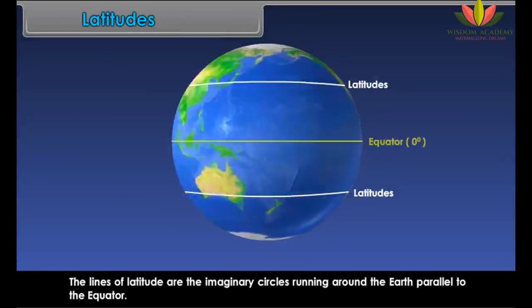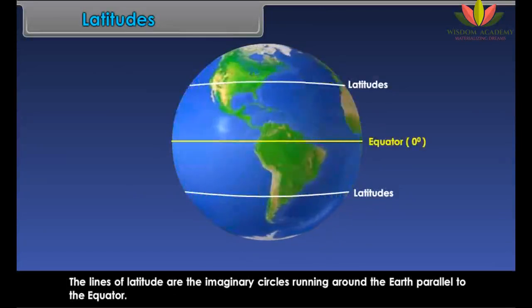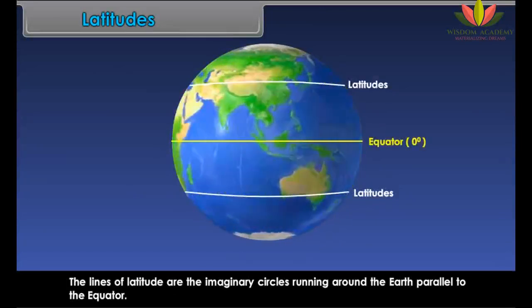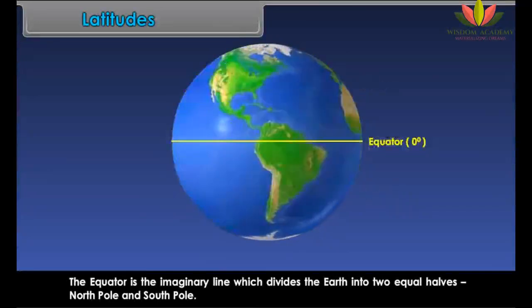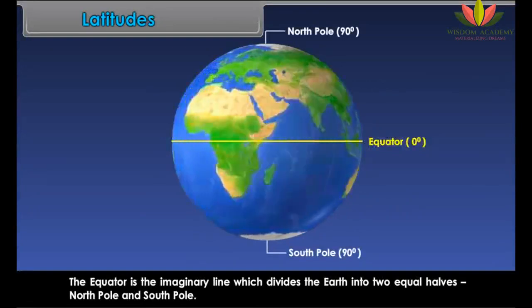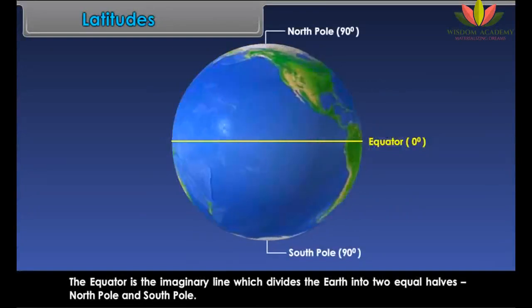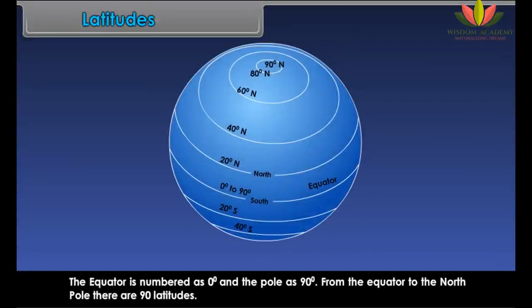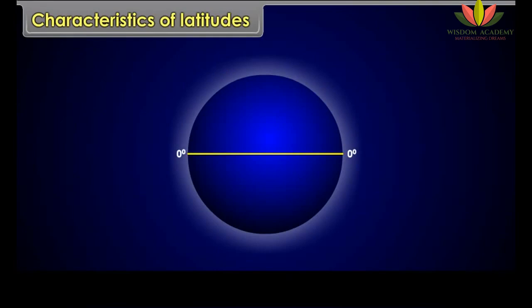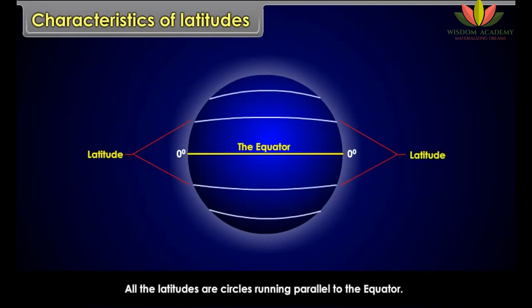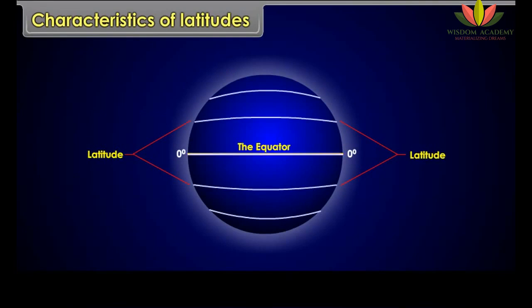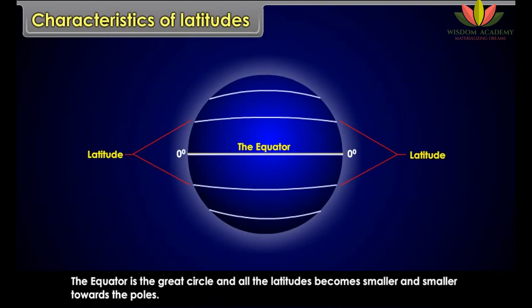Latitudes. The lines of latitude are the imaginary circles running around the earth parallel to the equator. The equator is the imaginary line which divides the earth into two equal halves. The equator is numbered as zero degrees and the poles as 90 degrees. From the equator to the North Pole there are 90 latitudes. All the latitudes are circles running parallel to the equator. The equator is the great circle and all the latitudes become smaller and smaller towards the poles.